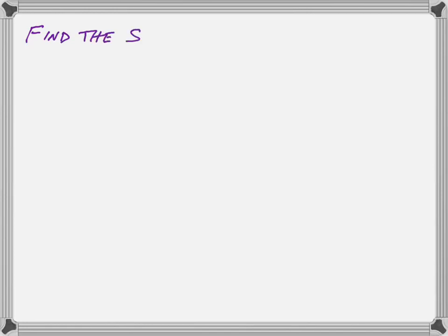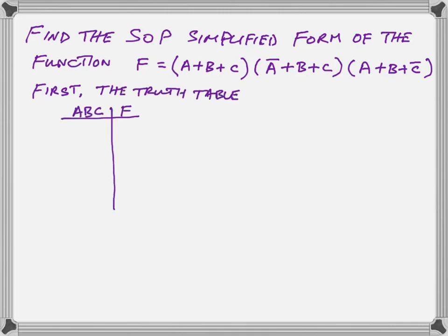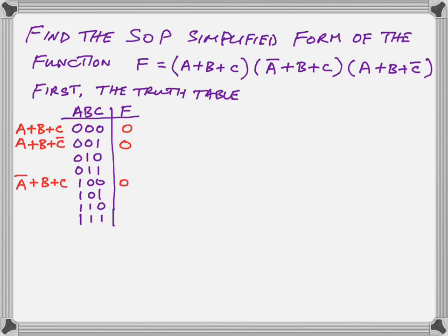Now, let's try an example where we're trying to find the sum of products form and we're given a product of sums expression. Here we are given a product of sums expression or function and we're asked to find the sum of products function that corresponds or the same truth table will be produced by both. So let us see how that goes. First, we're going to write out our truth table as we did before and this time we're going to put on the zeros. We're going to put on the zeros, the three zeros that are represented by those three terms as shown there.